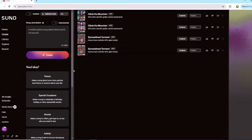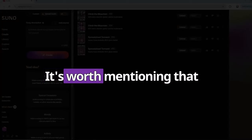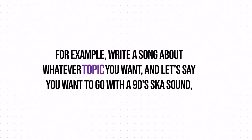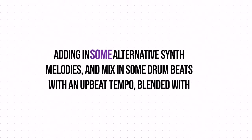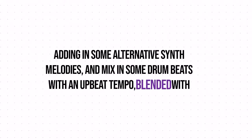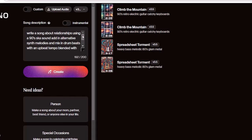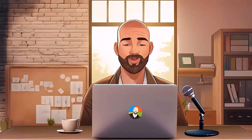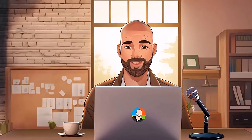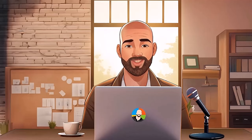Before we wrap up this section on simple prompts, it's worth mentioning that you get the best results by using descriptive prompts. For example, you could write a song about a topic with a 90s ska sound, adding alternative synth melodies, drum beats with an upbeat tempo, traditional instruments, and an offbeat guitar. However, the downside is that if you give Suno too much information, it may get overwhelmed and the results may not be the best, so you'll need to find the appropriate balance that works for you.